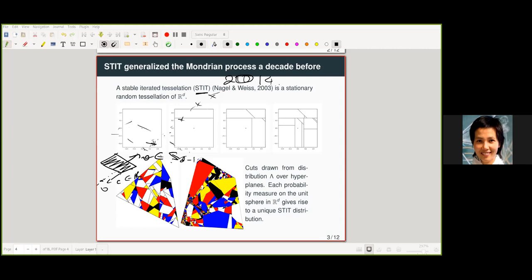So compared to the Mondrian process, the STIT process is more general because it allows for general cut directions, general hyperplane, whereas the Mondrian is the special case where you're drawing only from one of the normal vectors. So the Mondrian, you're looking at the normal vectors can only be in the set E1, E2, up to ED, where these are the standard coordinates.